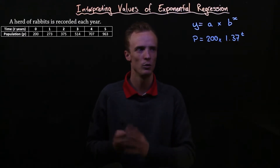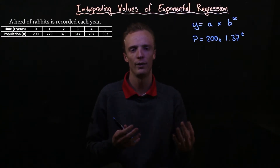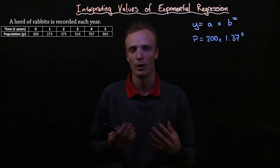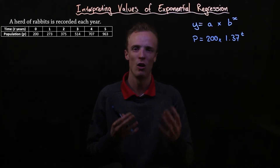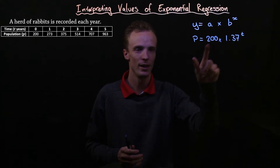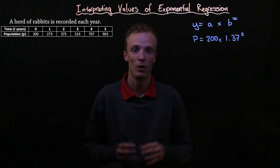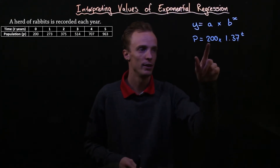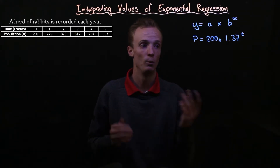In context to a problem, our a value can be thought of as the starting value of our response variable when our explanatory variable is equal to 0. Because this had such a high correlation of exponential regression between them, the 200 here did actually match perfectly to our starting value of the population when t was equal to 0. So our 200 tells us that's how many rabbits there were when the time was 0.